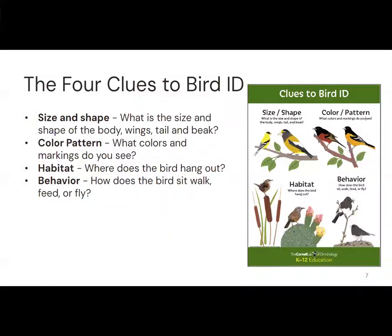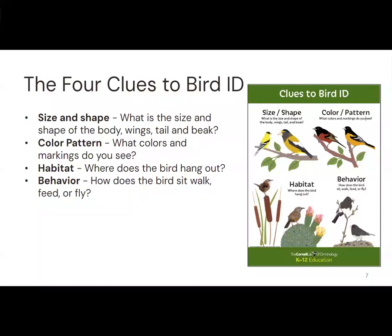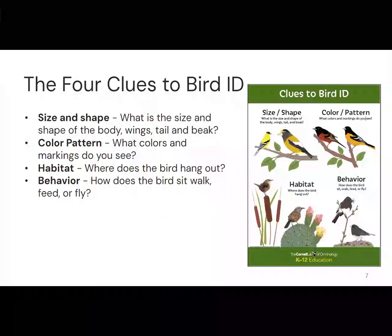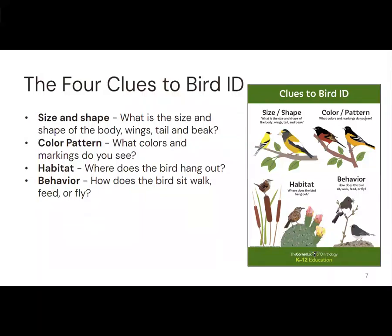The next ID clue is color pattern — looking for what colors are where on the bird, and what markings you see on what parts of the body. For habitat, this basically tells us where the bird lives, which helps narrow down the birds we're looking for. And then behavior — we're talking about things like posture, foraging, and flight patterns. That might all sound big if you haven't gone far into bird ID yourself, but these are things you pick up the more you're out there.